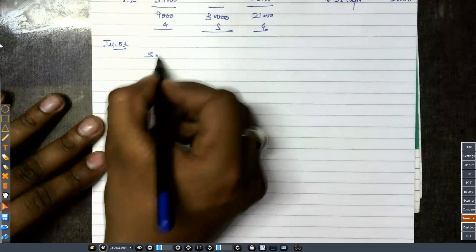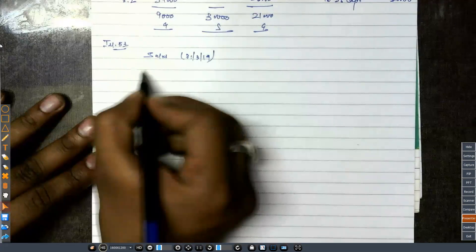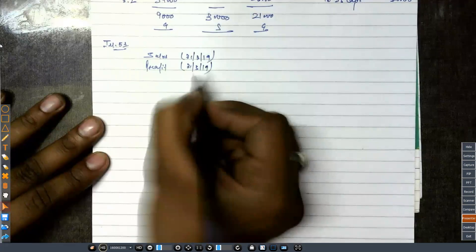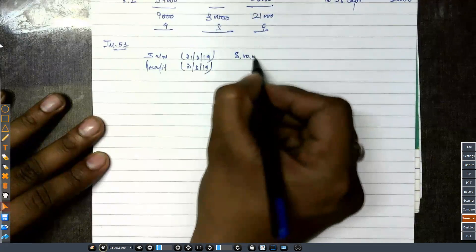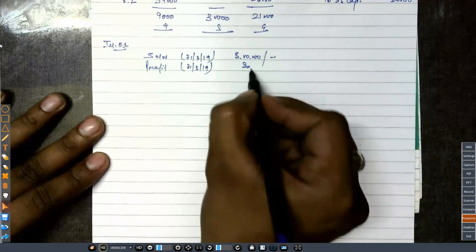We have been given the sales for 31st March 2019, last year, and you have been given the profit for 31st March 2019. You have been given the sales and the profit for 31st March 2019. Are you clear?